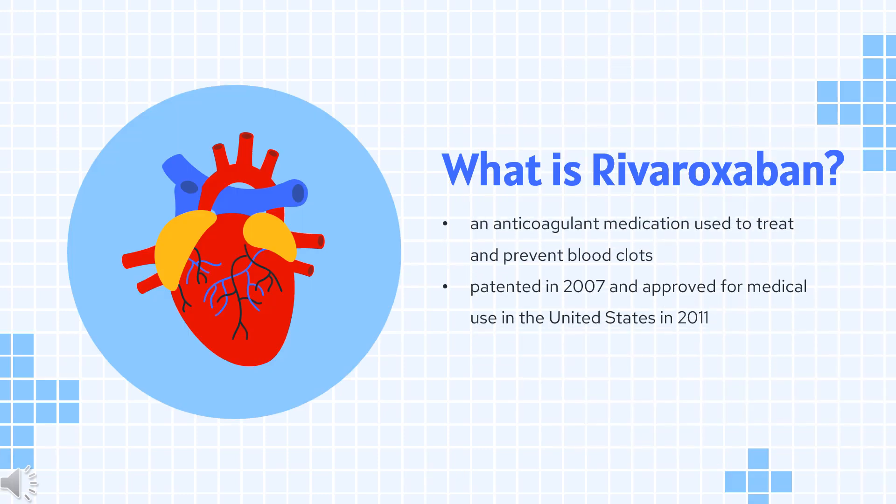Rivaroxaban, sold under the brand name Xarelto among others, is an anticoagulant medication used to treat and prevent blood clots. Specifically, it is used to treat deep vein thrombosis and pulmonary emboli and prevent blood clots in atrial fibrillation and following hip or knee surgery. It is taken by mouth.